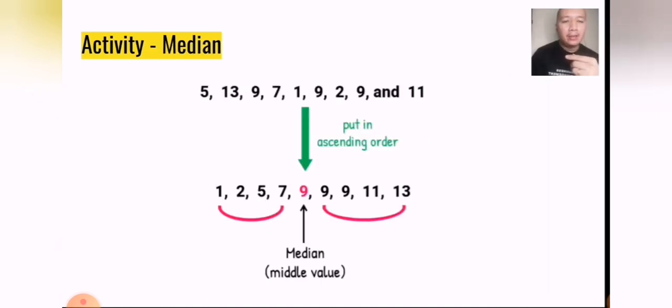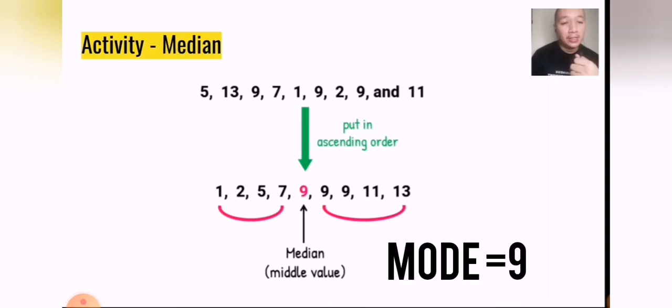Next, for our median as well as our mode, what we have to do first is arrange it in an ascending order. We started with 1, 2, 5, 7, 9, 9, 9, 11, and 13. From this given, we can see that we have 9 numbers, and if we would split it in half, 9 total number is odd. So if it's odd, it's very easy to find where the median is. It's just in the middle. At the same time, we can also see that the number 9 is the most common number from this set. Thus, it also becomes our mode.